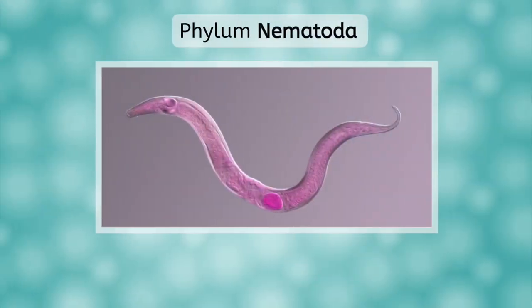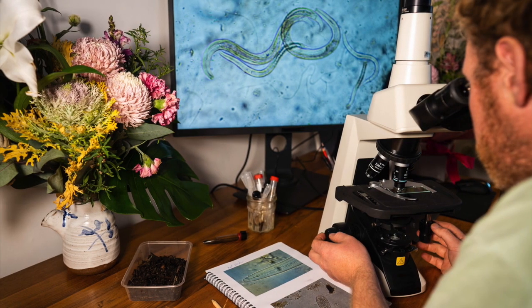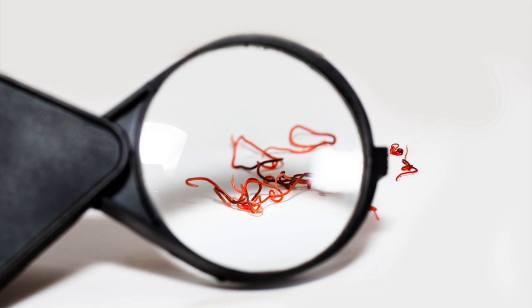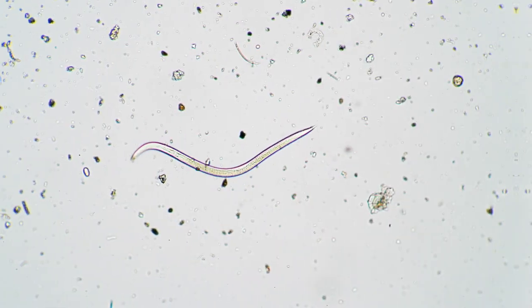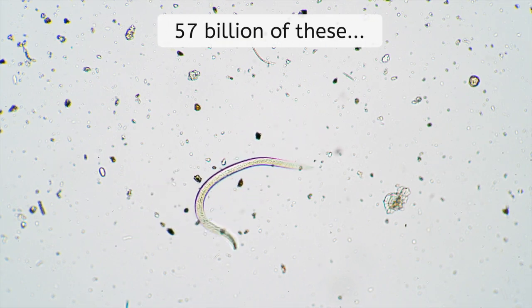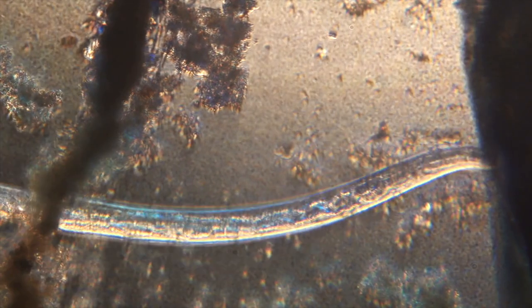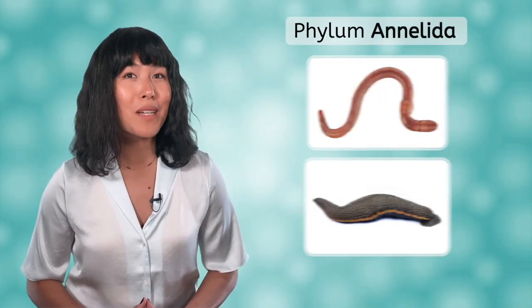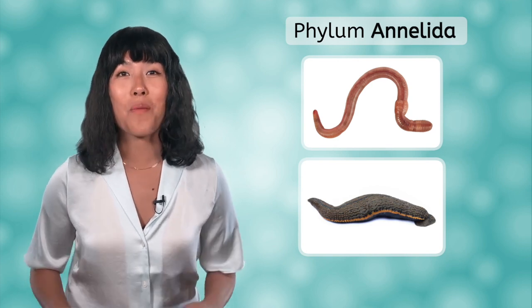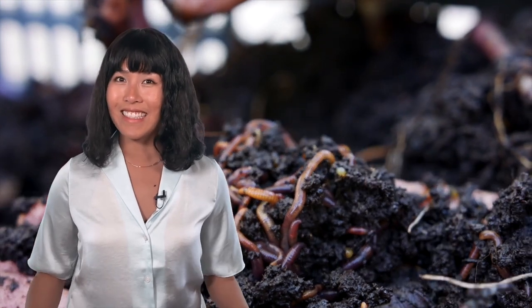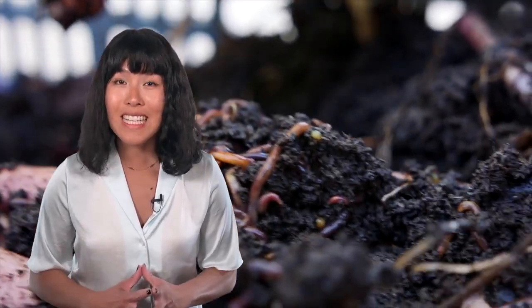In the phylum Nematoda, we find fascinating little creatures. Nematodes, also known as roundworms, are most often microscopic in size, though some can reach lengths of a few millimeters. Here's a staggering statistic: there are approximately 57 billion nematodes for every human on Earth. They are vitally important to soil ecosystems and keep soil healthy for plants and other organisms to grow. Another phylum of worms, the annelids, are segmented worms such as leeches and the common earthworms you probably had fun digging out of the ground as a kid.